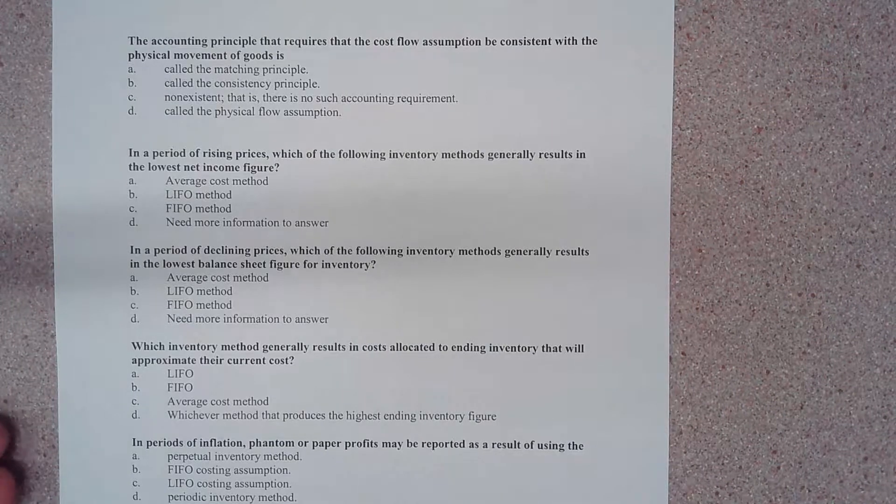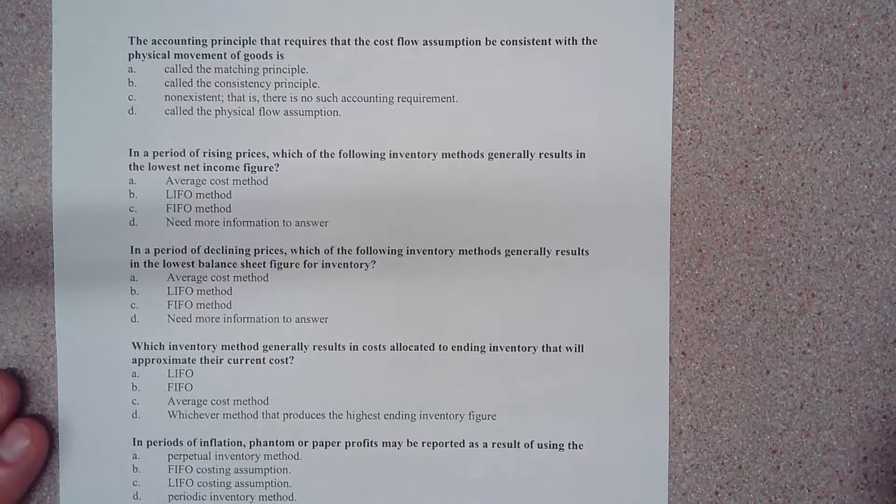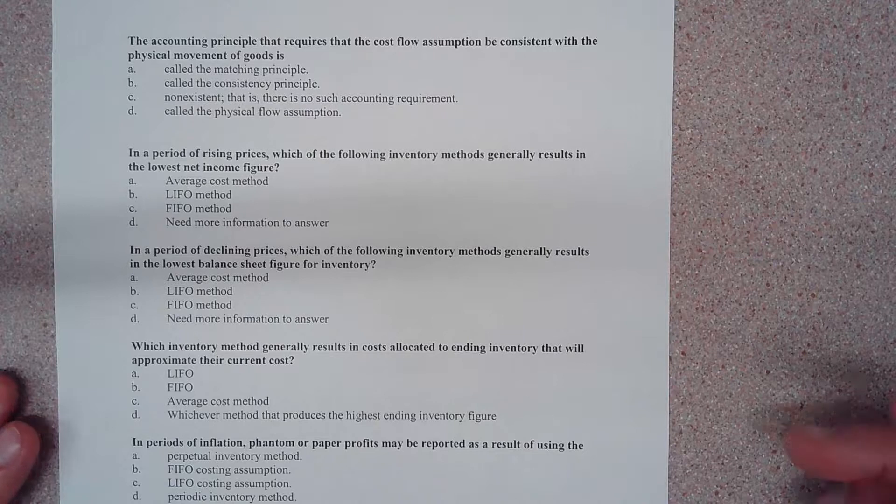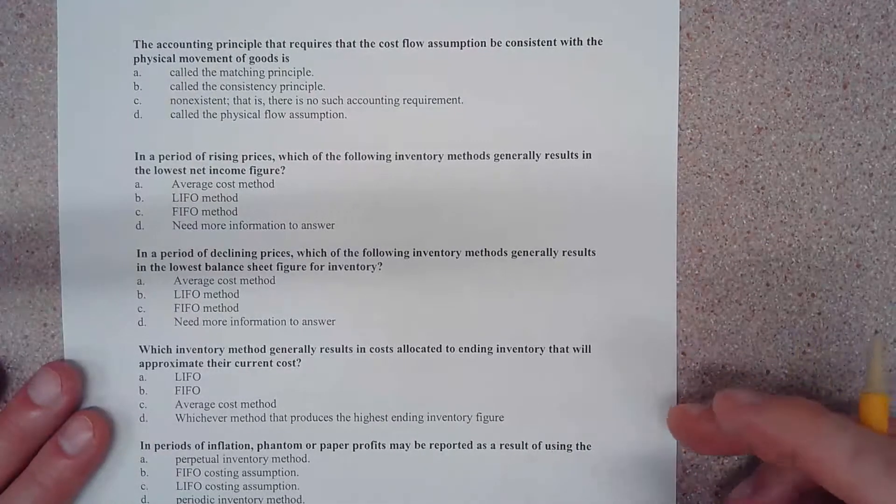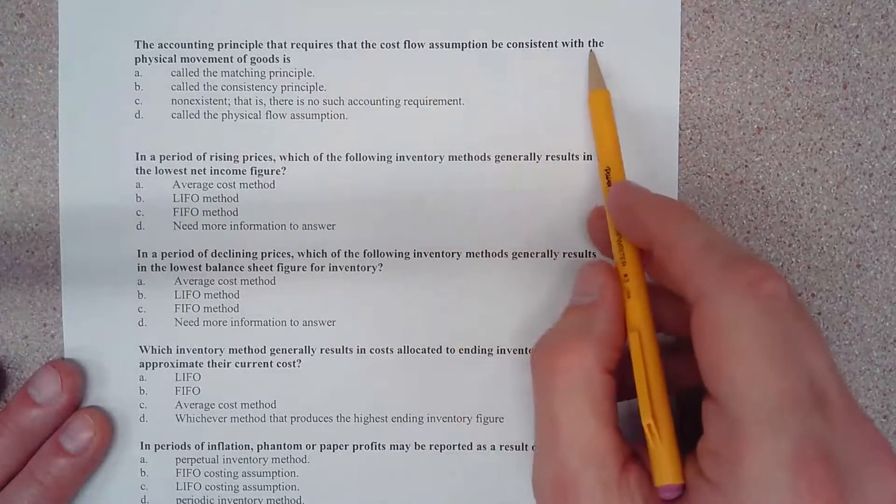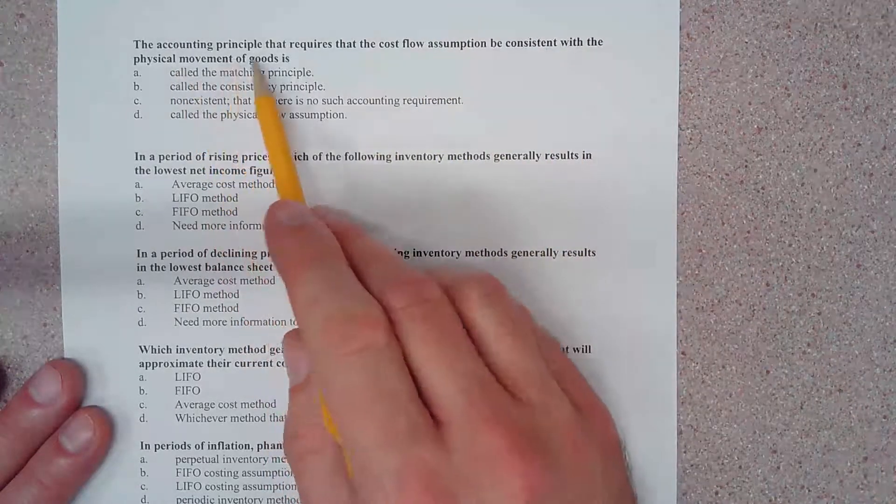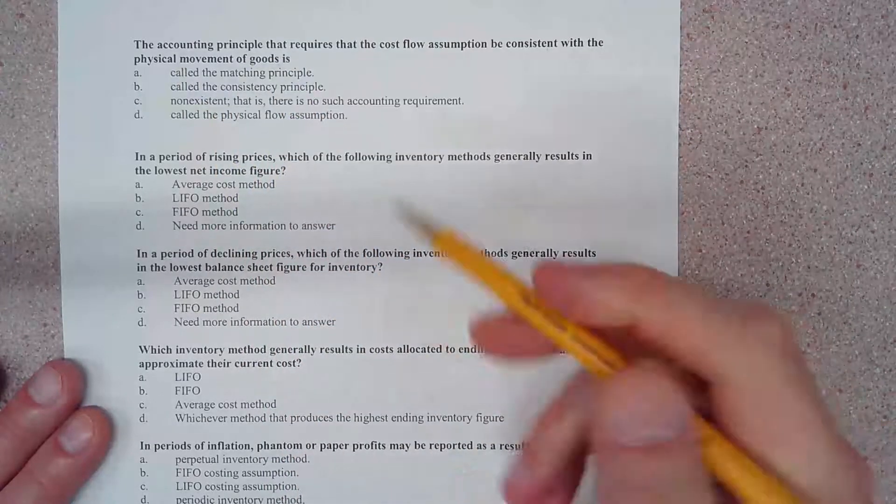All right, let's take a look at some multiple-choice questions to help us understand these cost flow assumptions a little bit better. The first one is a bit of an oddball question. It says the accounting principle that requires that the cost flow assumption be consistent with the physical movement of goods is... drumroll. Well, let's see, let's go through these.